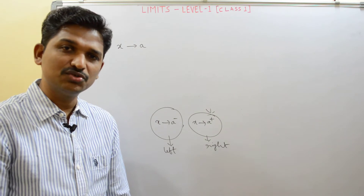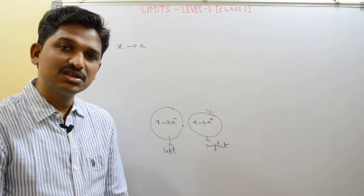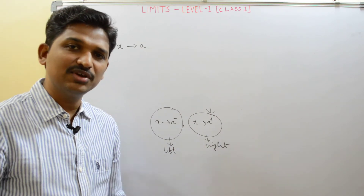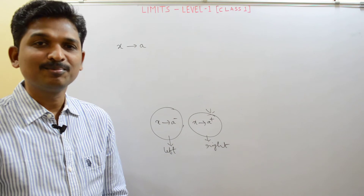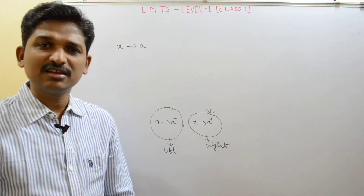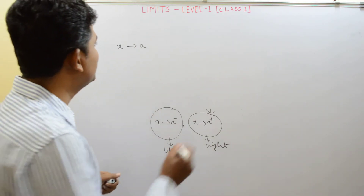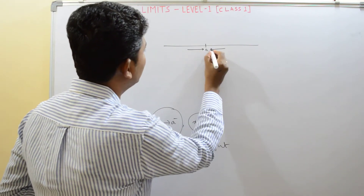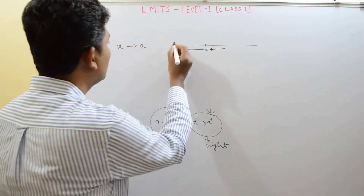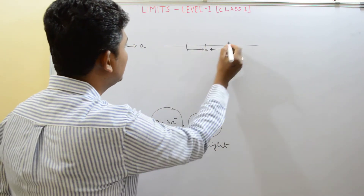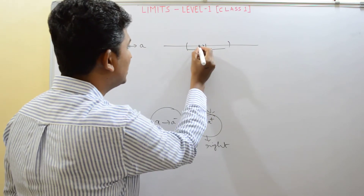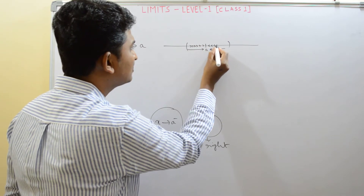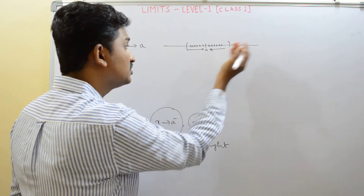Consider a train approaching Bangalore station. It is approaching the station — but from where? From Ashwantpur or from Whitefield? It may approach from anywhere. Similarly, x approaches to a means x may approach from the left or from the right. X approaches to a means all x values will be in the neighborhood of a.